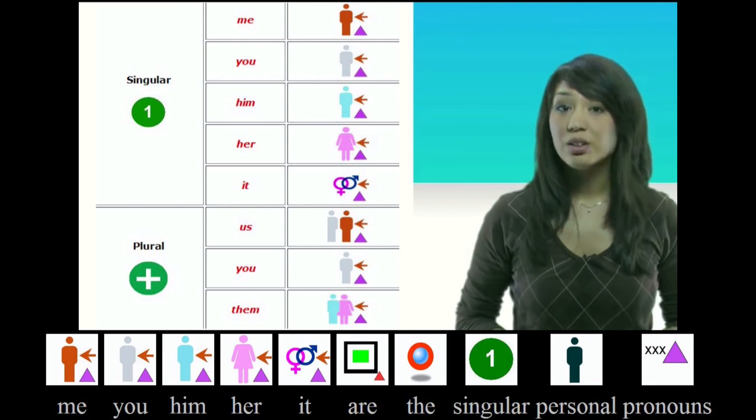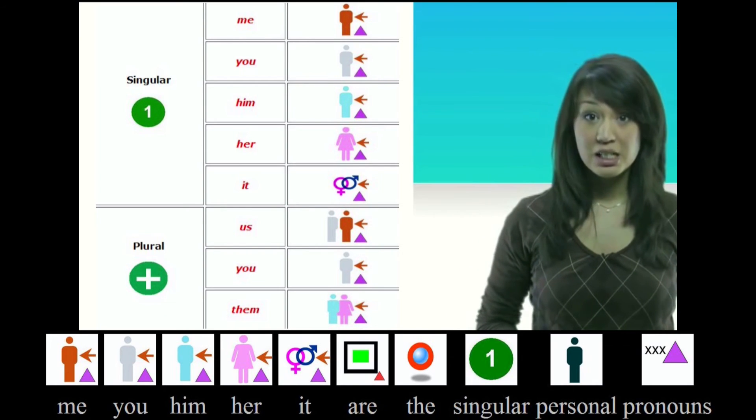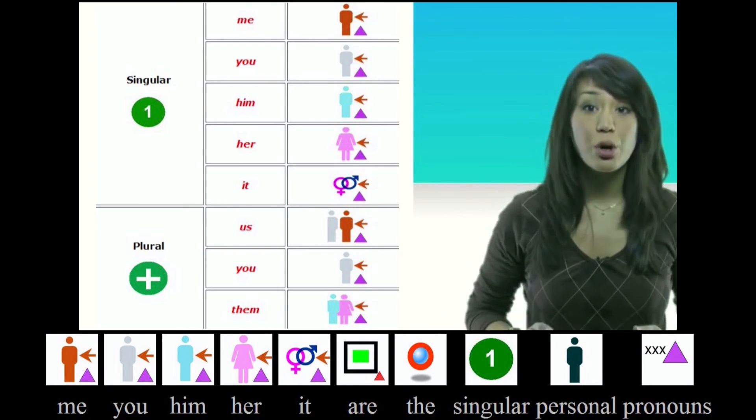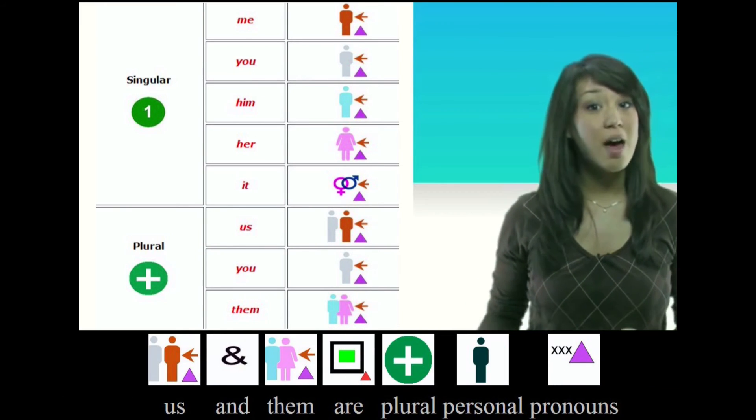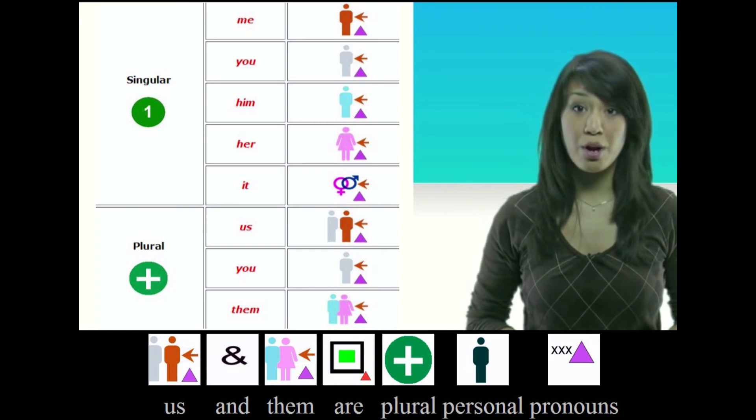Me, you, him, her, and it are the singular personal pronouns. Us and them are plural personal pronouns.